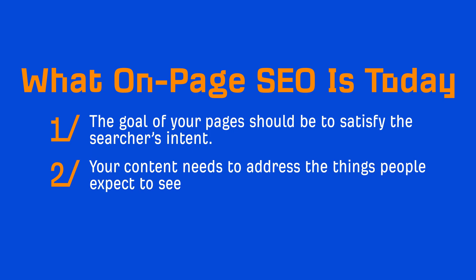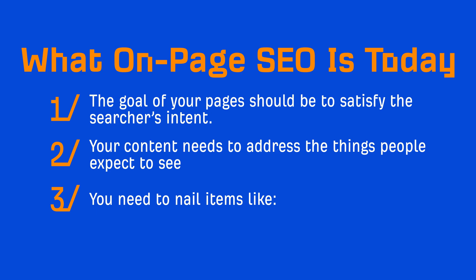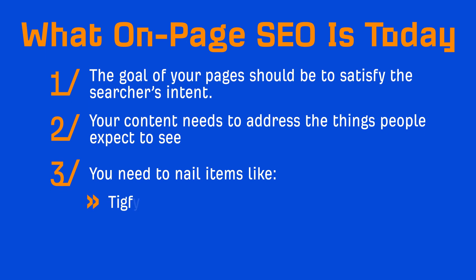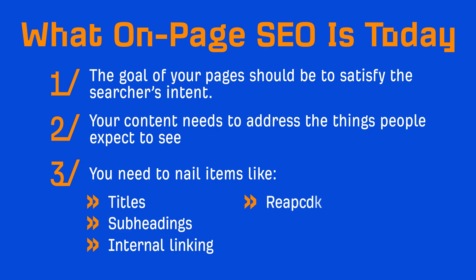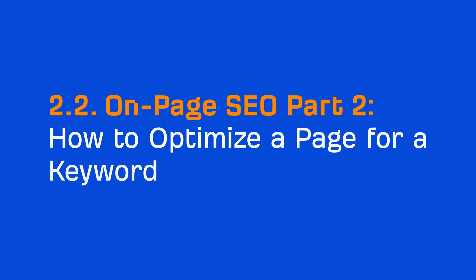In addition to this, your content needs to address the things people expect to see. You'll also want to nail the more tangible items like titles, subheadings, internal linking, readability, and of course the actual content itself. These are the things we'll be answering in part 2 of our on-page SEO module, where we'll get more tactical and talk about how you can create content that's optimized for search.